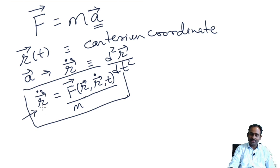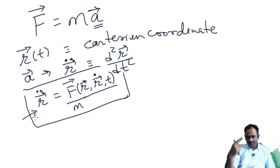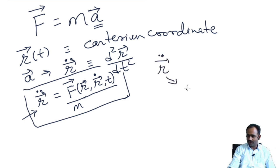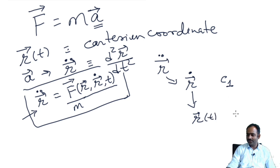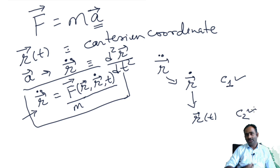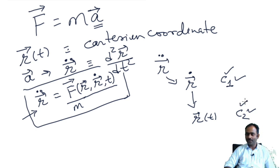That has to come from your experimental experience. When you say it is second order in a time derivative, it means that the solution will involve two constants of integration. When you integrate once, you go from R-double-dot to R-dot, and you get a constant of integration c1. Integrate once more and you arrive at R, with another constant c2. These two constants are typically the coordinate and velocity of the particle at the initial time t=0. You could use them to fix what c1 and c2 are.